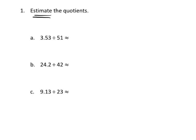So we have 3.53 — that's 3 and 53 hundredths — divided by 51. I might change 51 to 50, and I might change 3.53 to 350. So I rounded down from 353 to 350, and I'm changing it into unit form, calling it hundredths instead of 3.50.